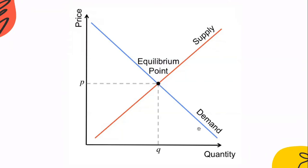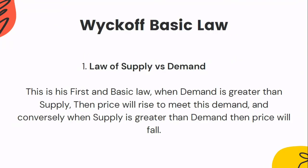Once demand crosses zero to minus territory and supply crosses zero to plus territory, the balance has shifted. This zero crossing is our equilibrium point, and based on this point, we're going to take trades in Volume Spread Analysis. I hope you understood the law of supply versus demand.